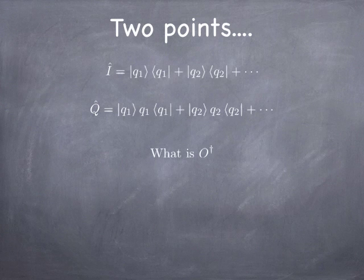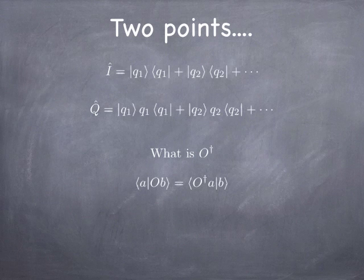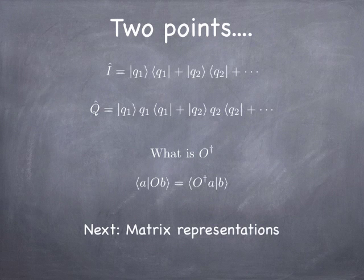Here's another thing. We talked about O-dagger, or the adjoint of O. In a matrix representation, the adjoint is the transpose conjugate. More generally, O-dagger means the following: if you apply O to a ket and take the inner product with another ket — that is, if you evaluate the inner product of A on the ket you get when you operate on B with O — it's the same thing as operating on A with O-dagger and then taking the inner product of that bra with the original ket B. That's the meaning of the adjoint.